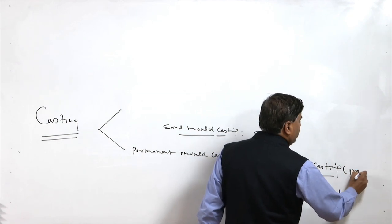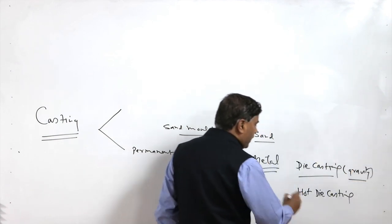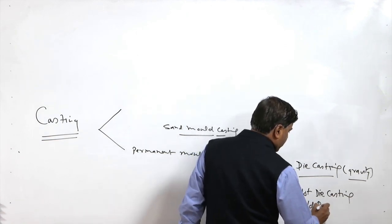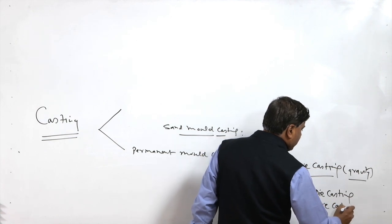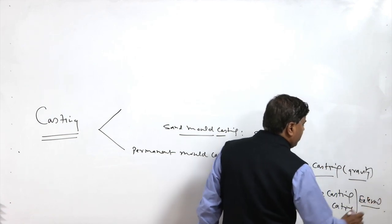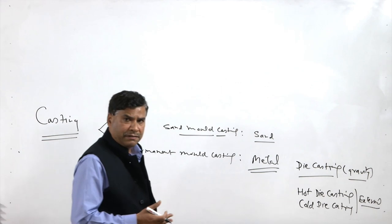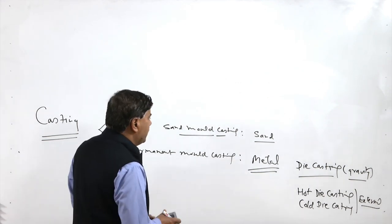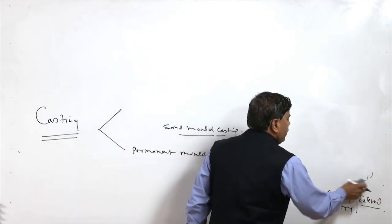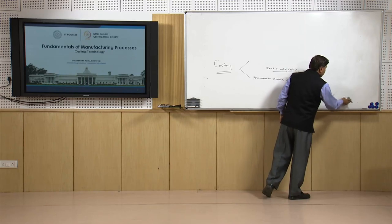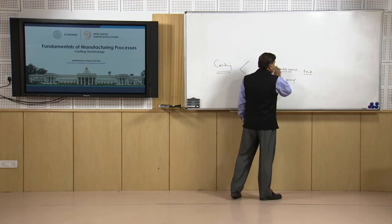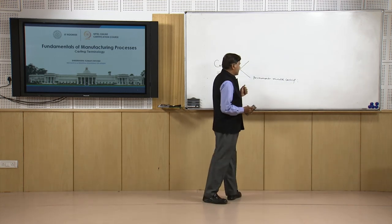In die casting, solidification normally occurs under gravitational force. In hot die casting and cold die casting, external pressure is applied, so that under the influence of external pressure, solid feeding as well as solidification of the molten metal is achieved. Permanent mould casting is justified for large volume production as well as where good surface finish and close dimensional tolerance are required.